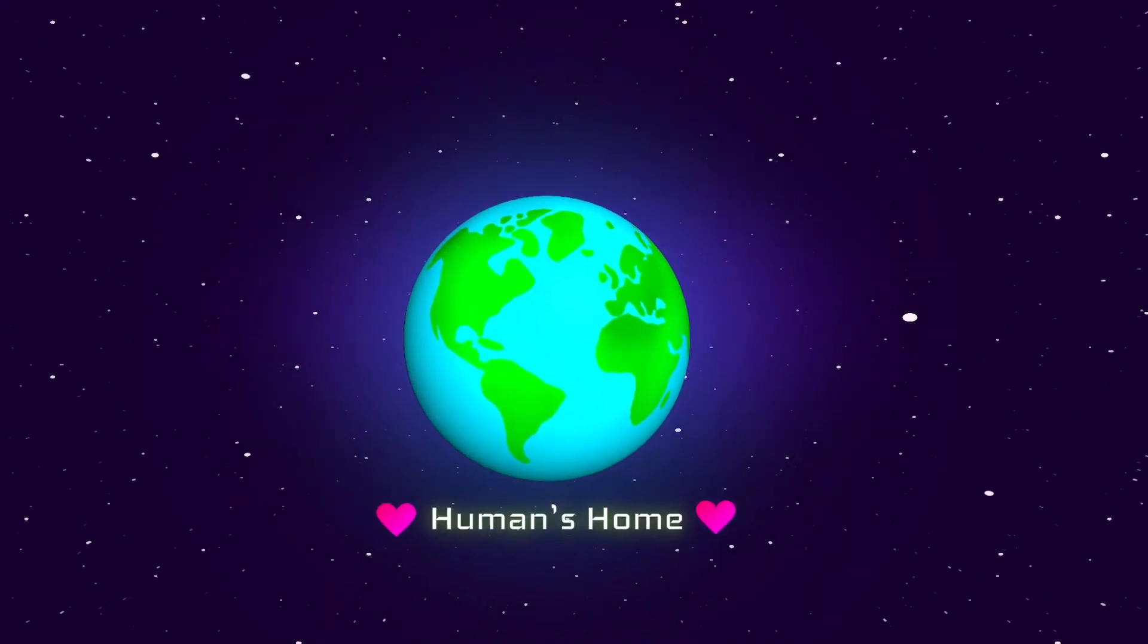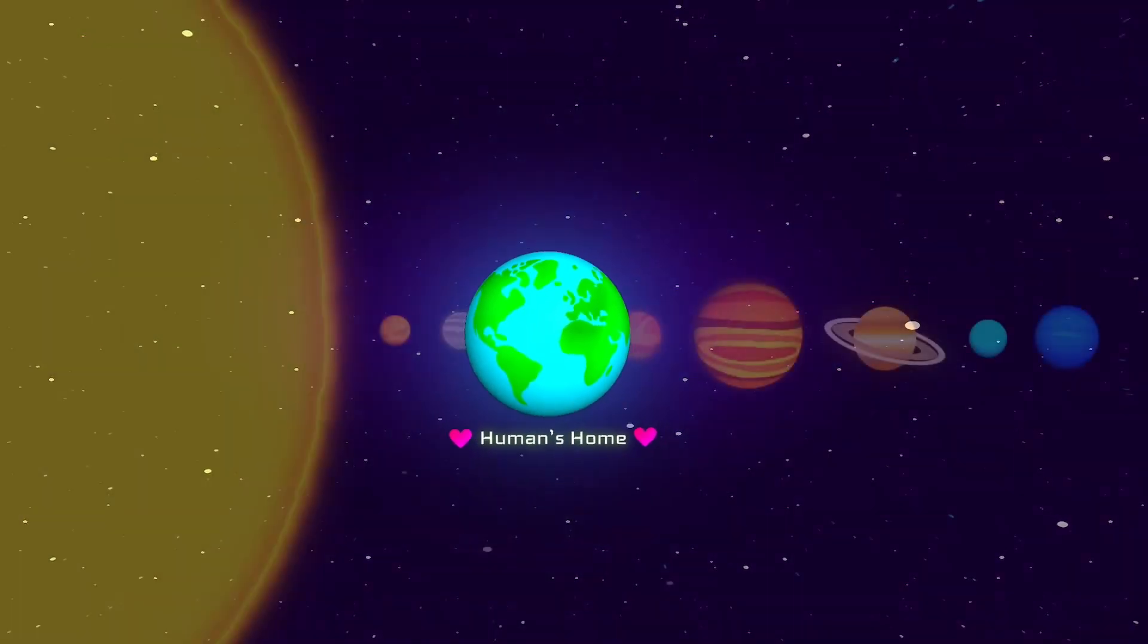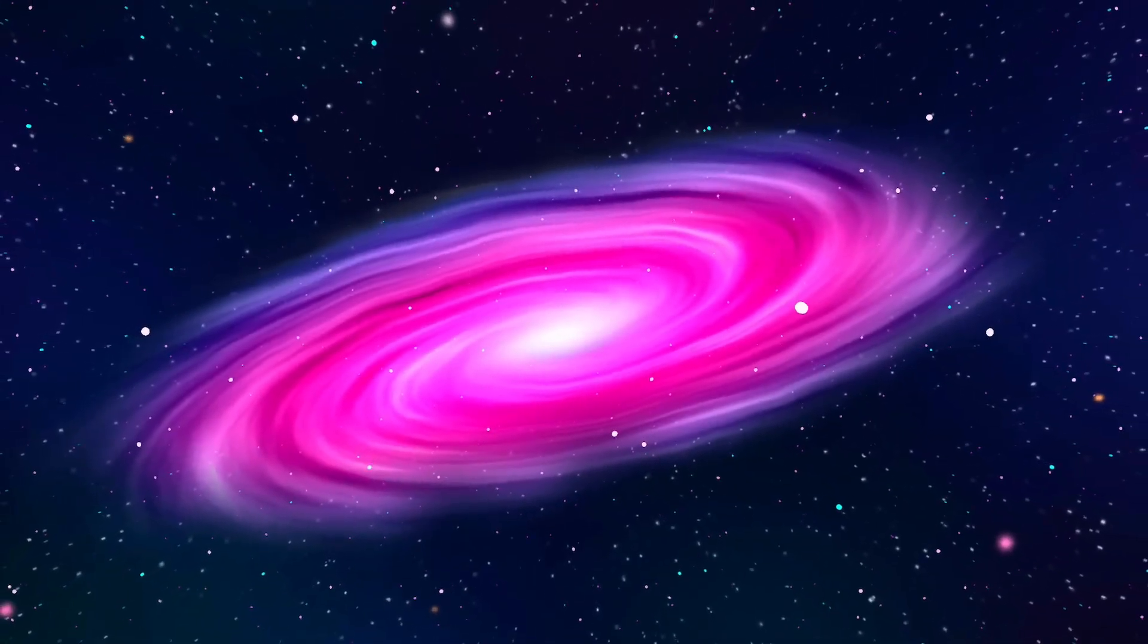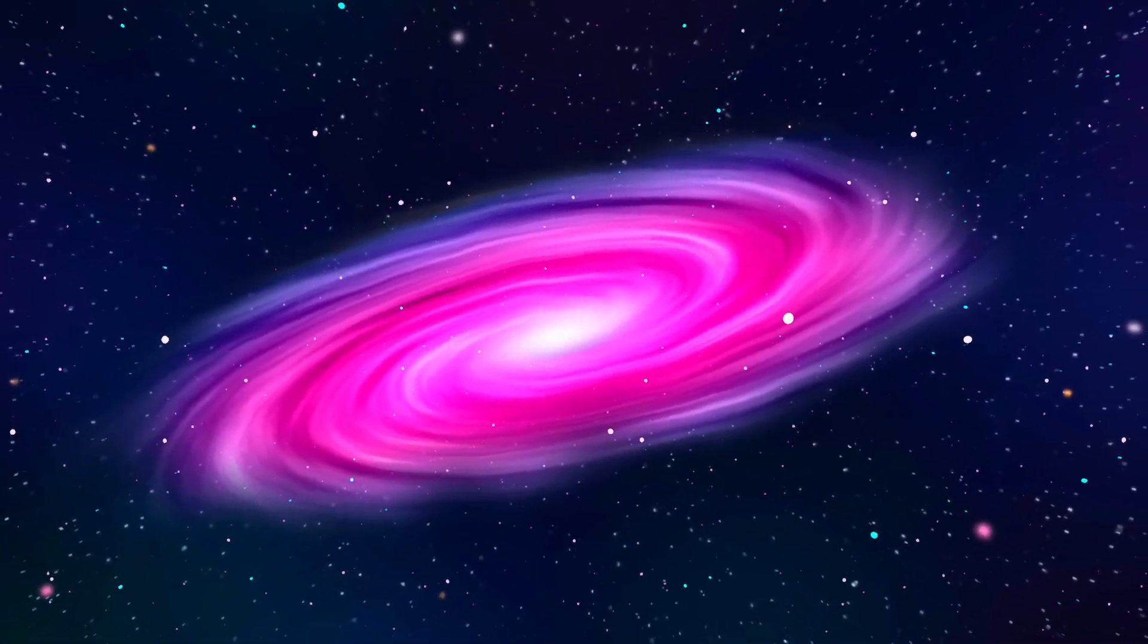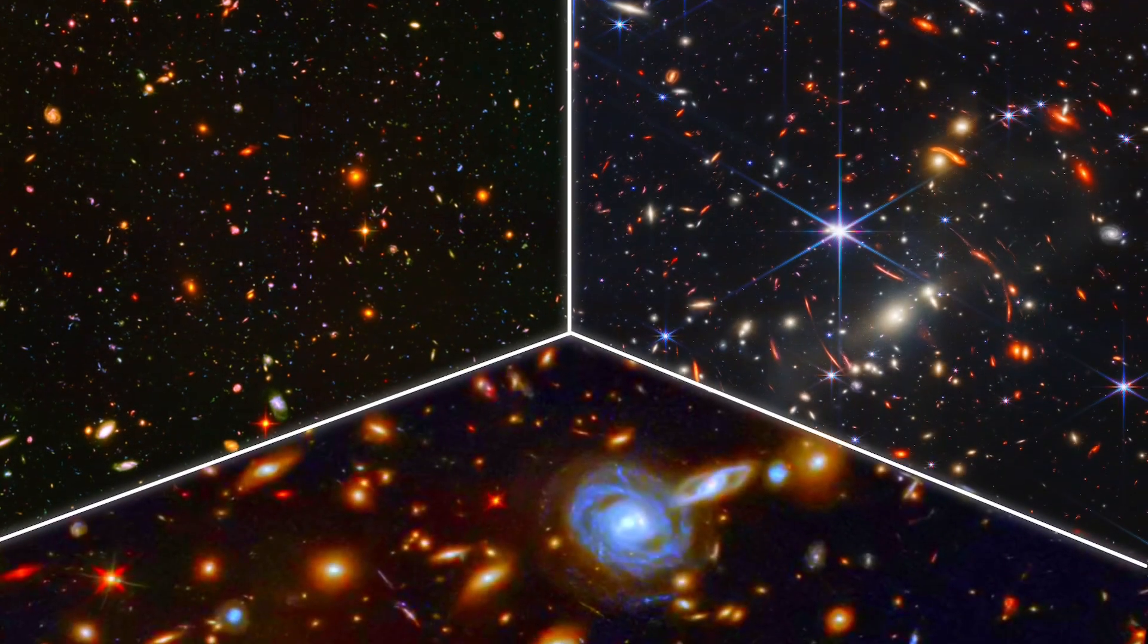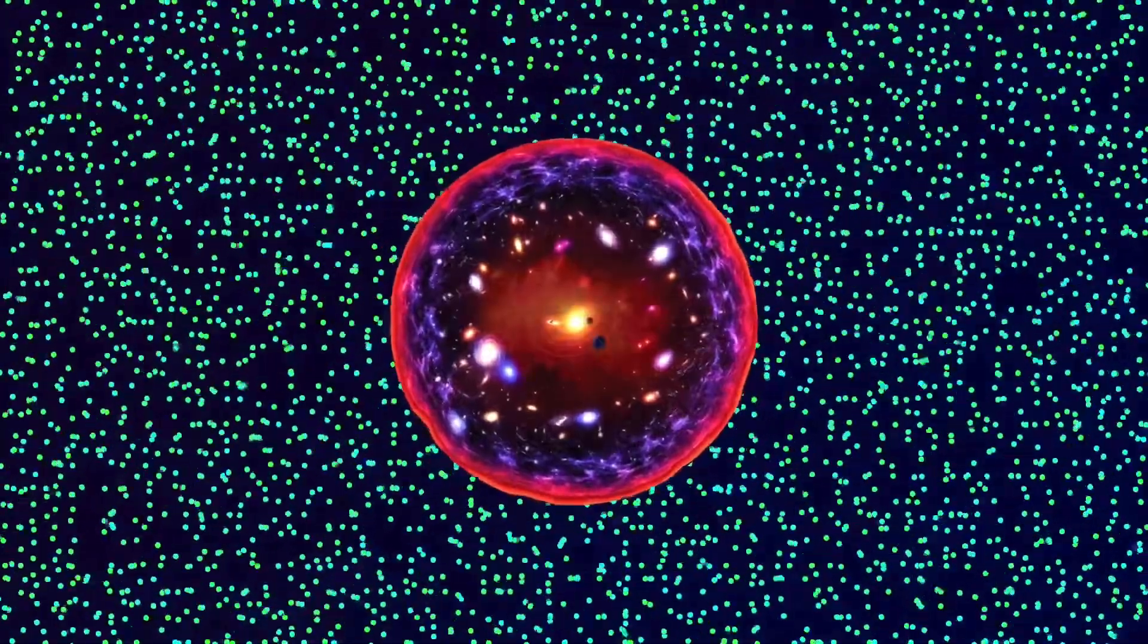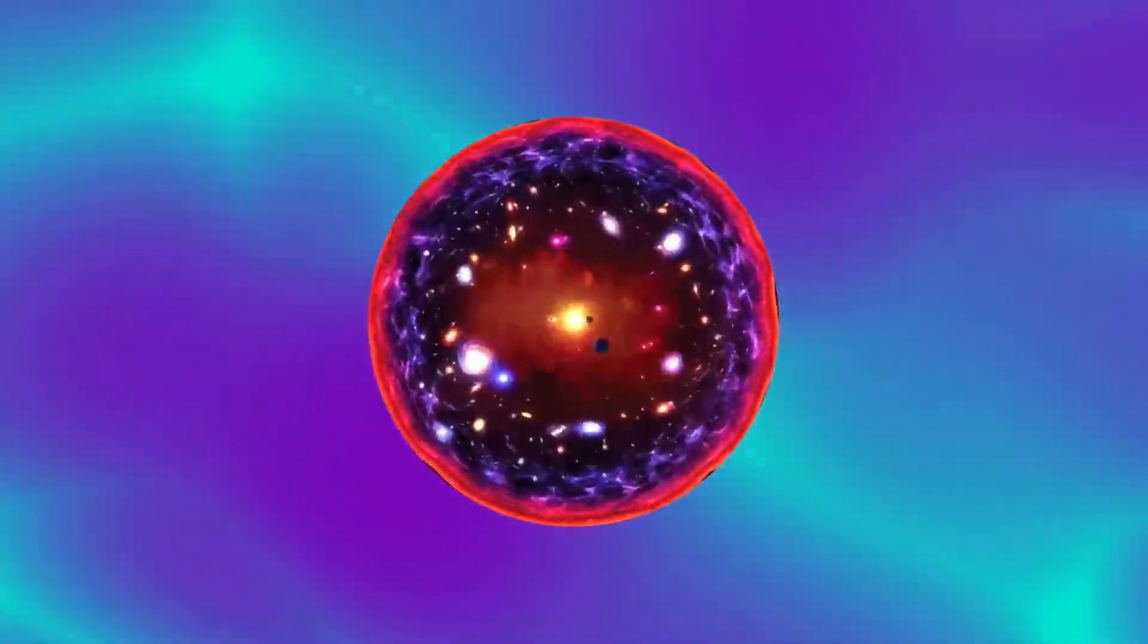We humans live on a small planet. This planet is part of the solar system. The solar system is part of the Milky Way galaxy, which has billions of stars. The Milky Way is in a universe that has billions of galaxies. But what is that universe in? What is outside our universe?